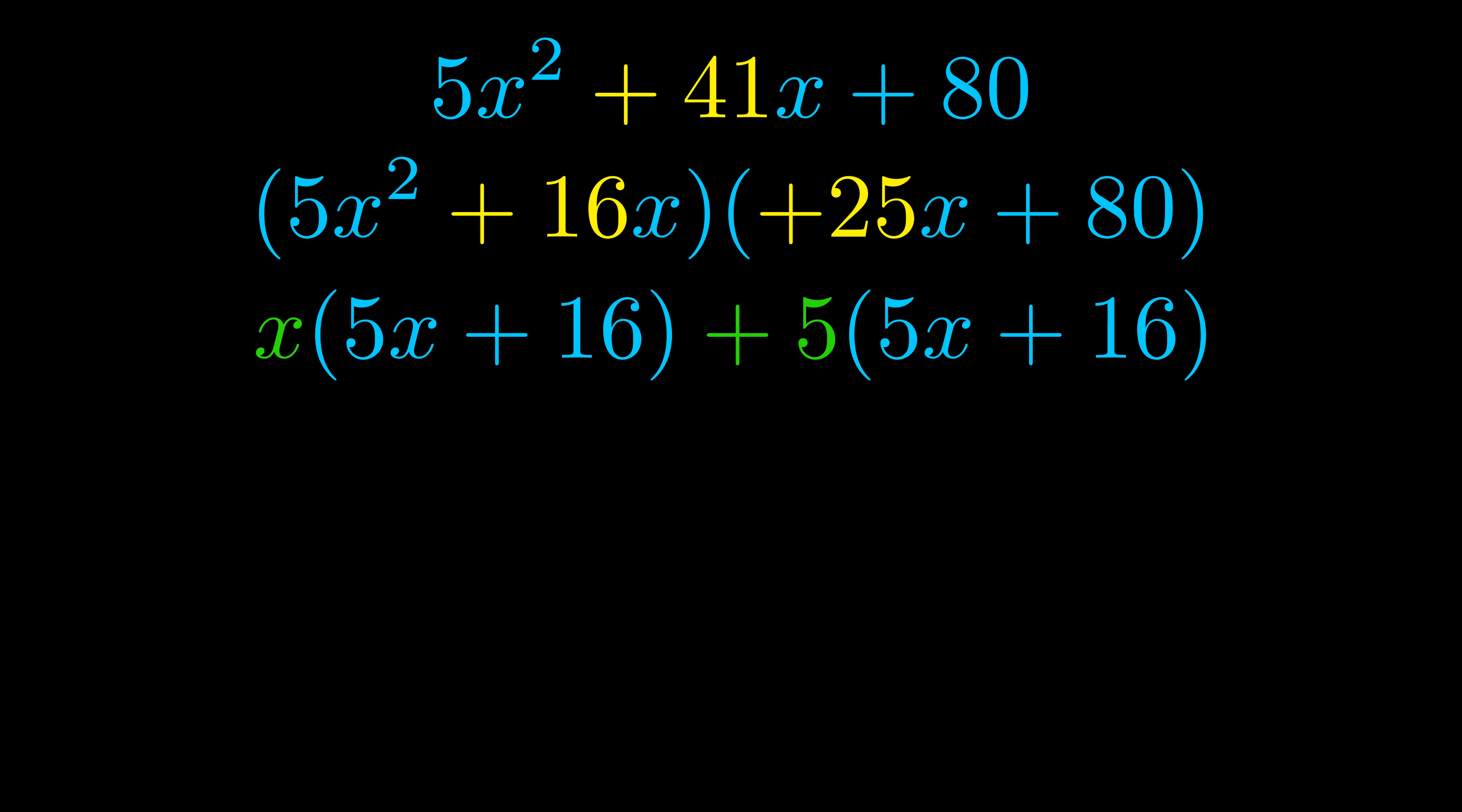Notice also how what remains inside of the parentheses is the same in both cases. The blue values are the same. Those blue values will become one of our factors and we will combine the two green values, the GCFs that we pulled out, to get the other one. And that is our fully factored equation.